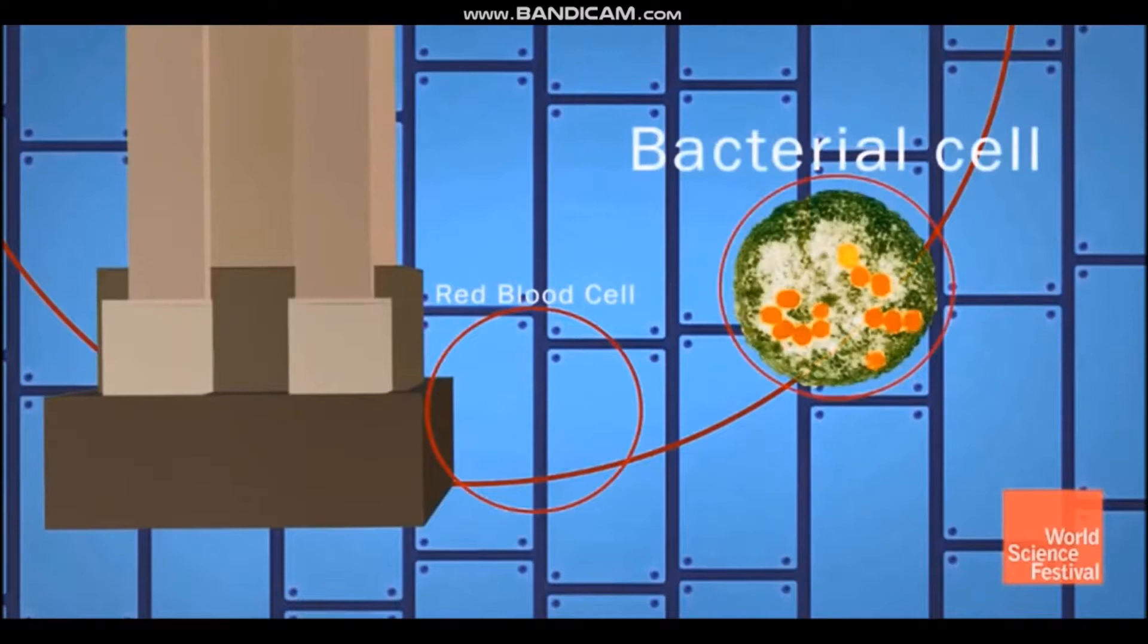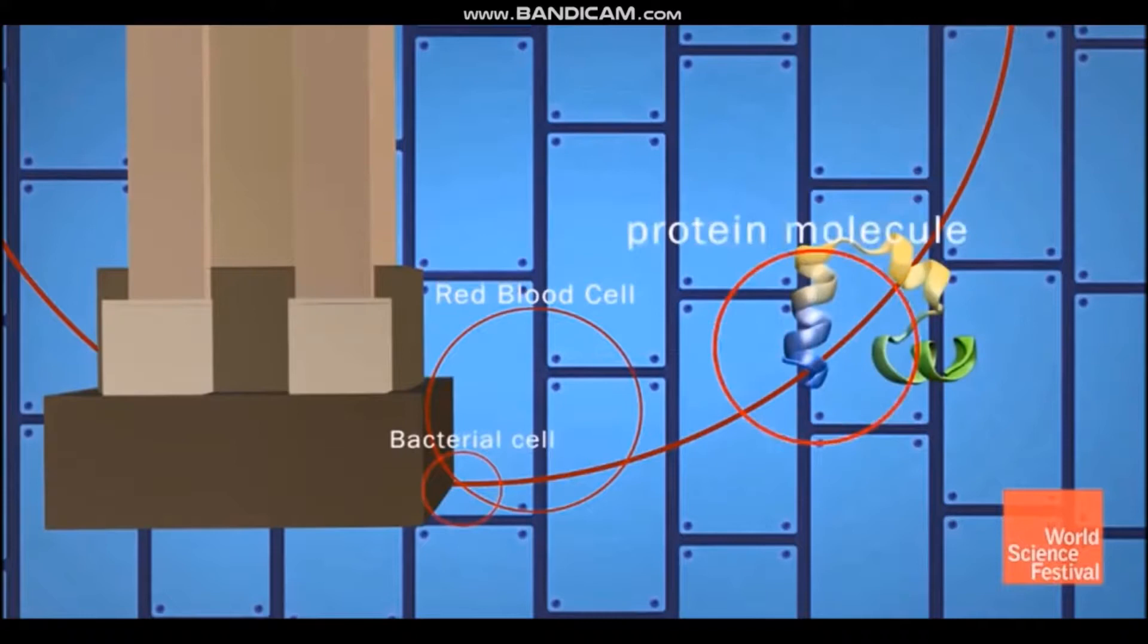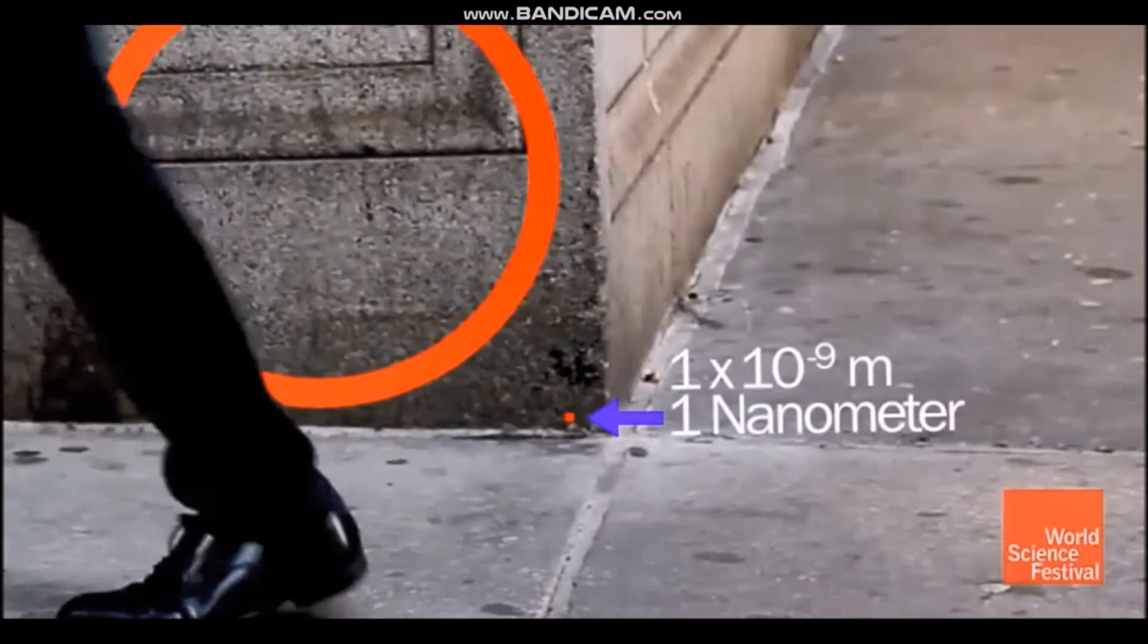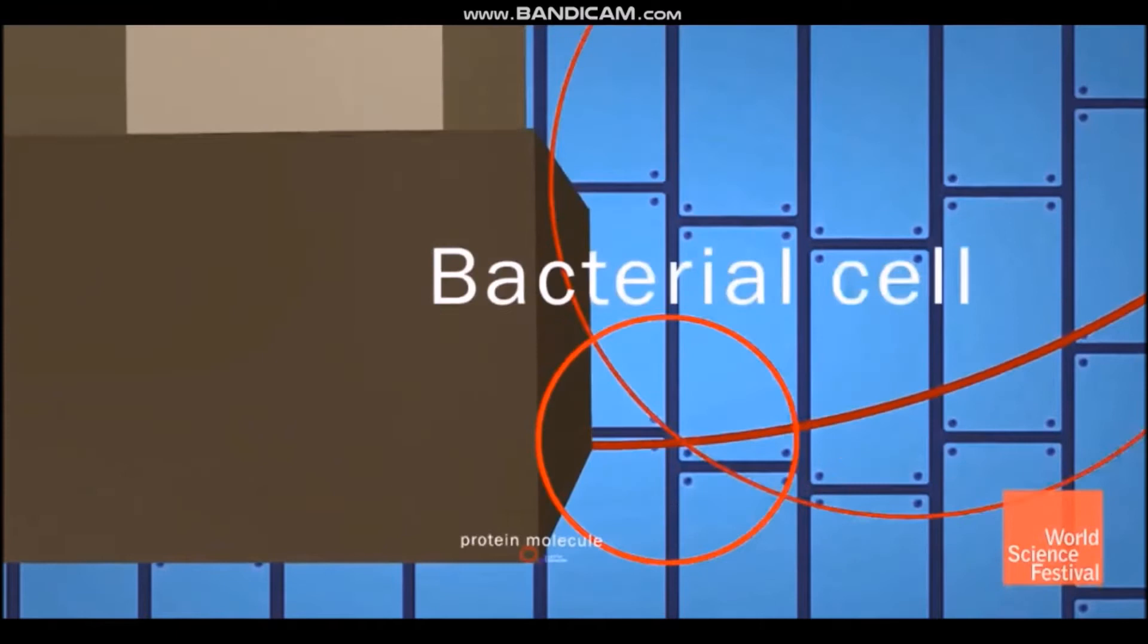A bacteria cell would be about 3 stories tall, and a protein molecule would be about 1 and a half feet tall. Finally, a nanometer would be a little less than a quarter of an inch. This is about 100,000 times smaller than the diameter of a human hair.